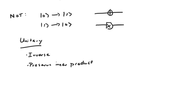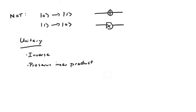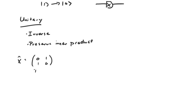Because a quantum gate is a linear operator, we can represent it as a matrix. Specifically, the NOT gate would be represented by this matrix, where the first column is the vector that basis vector |0⟩ is transformed into, and the second column is the vector that basis vector |1⟩ is transformed into. A simple quantum circuit that applies a NOT gate to a single qubit and then makes a measurement would look like this.